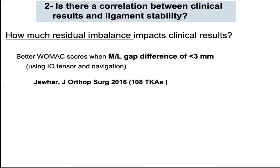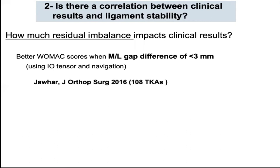There is great variability in the literature regarding the effect of residual ligament imbalances on clinical outcomes after total knee arthroplasty. One interesting study reported that better clinical scores were achieved when the medial-lateral gap difference was less than 3 millimeters.